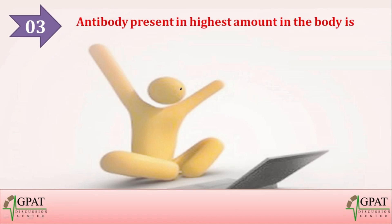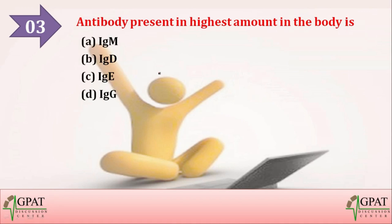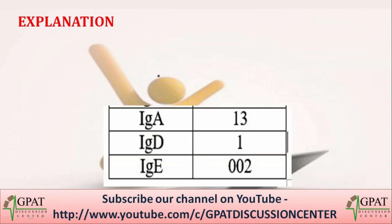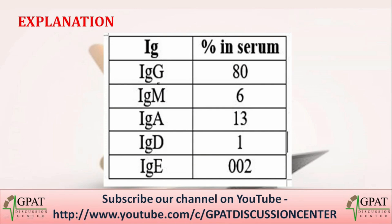The next question: the antibody present in the highest amount in the body is — option A: IgM, option B: IgD, option C: IgE, option D: IgG. The correct answer is IgG, which is present in the highest amount — 80% — where IgM is 6%, IgA is 13%, IgD is 1%, and IgE is 0.02%.